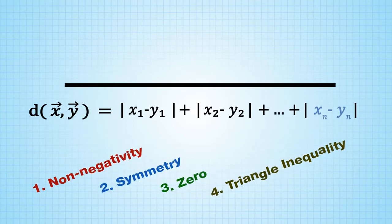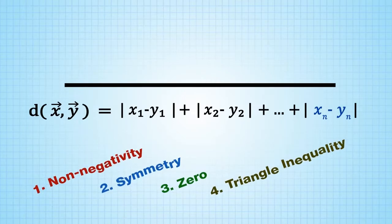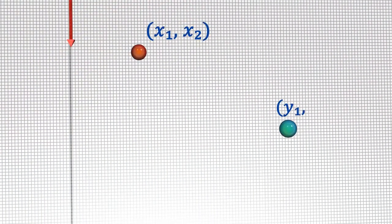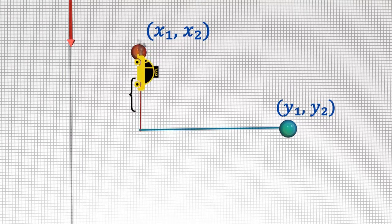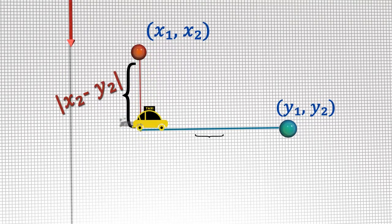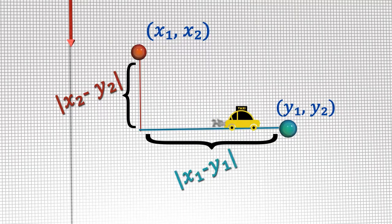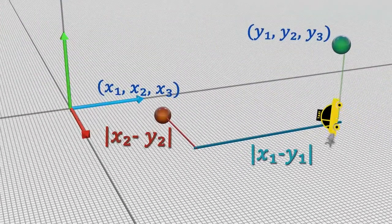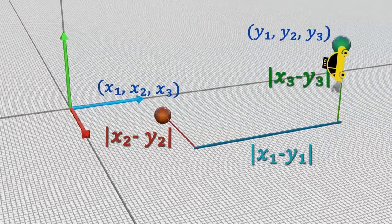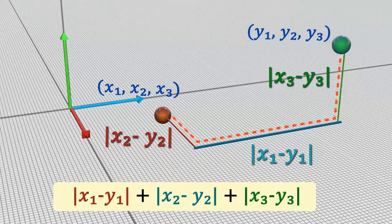So in the 3D case, we would measure the absolute value of the first component differences, the absolute value of the second component differences, and the absolute value of the third component differences and add them together.